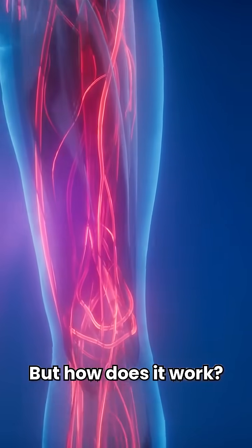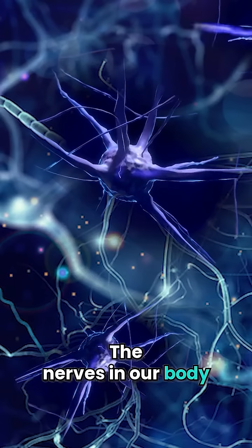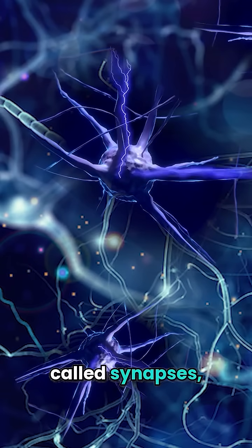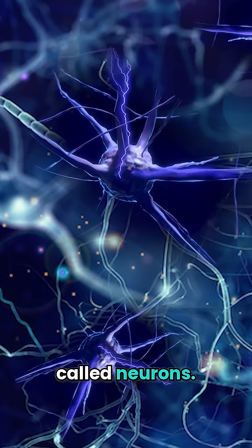But how does it work? The nerves in our body communicate with each other via electrical pulses called synapses, sent along the nerve cells called neurons.